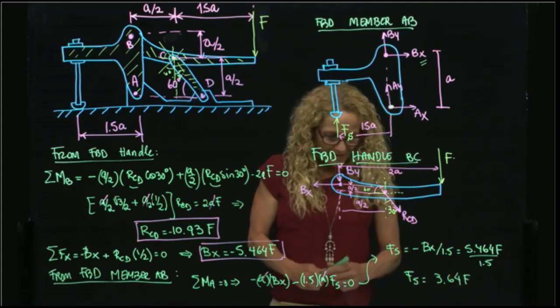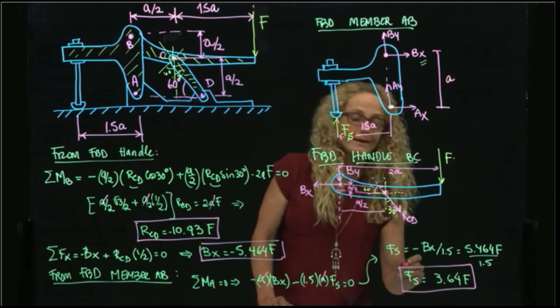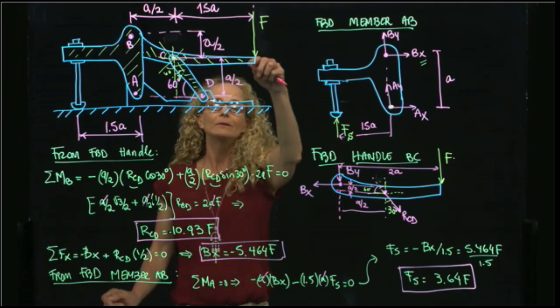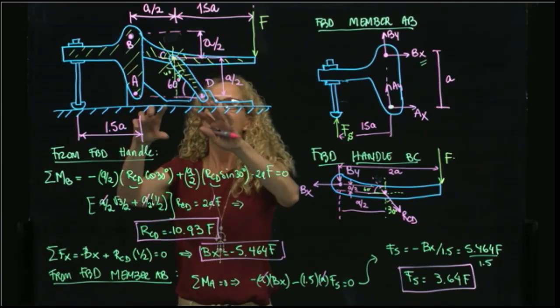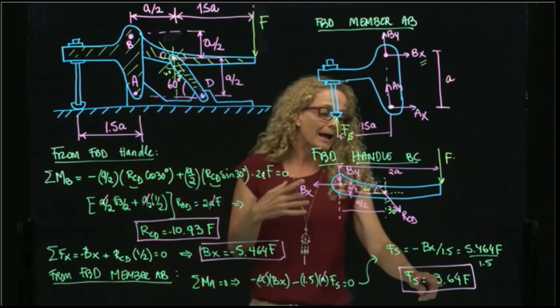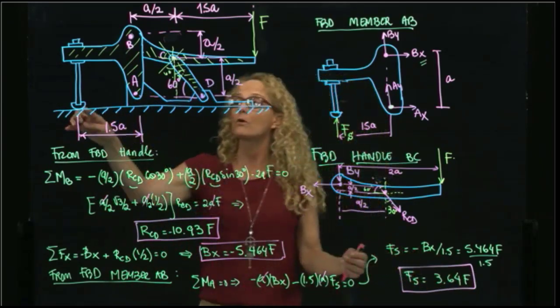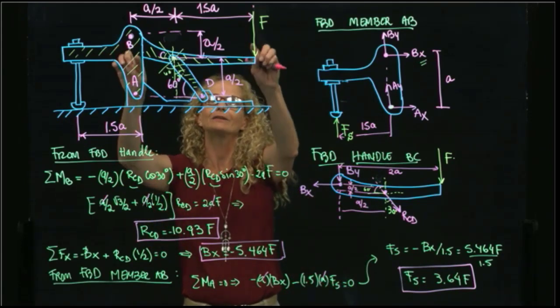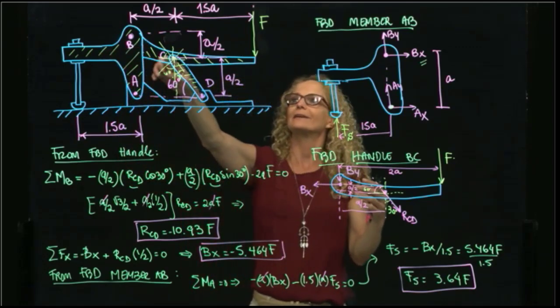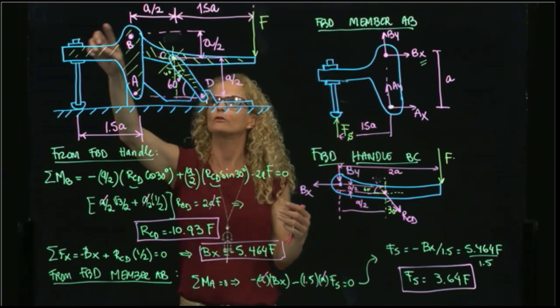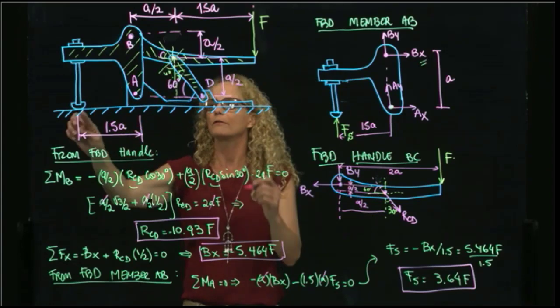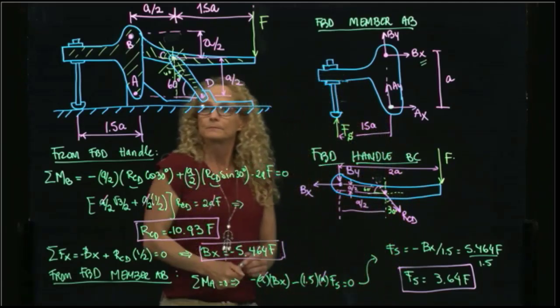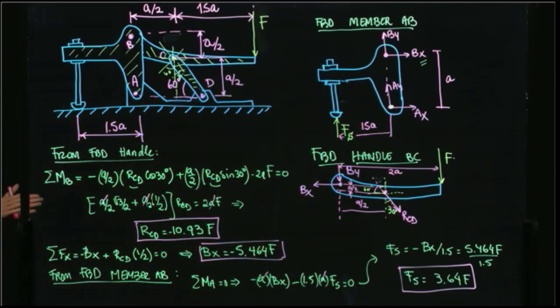I was able to find that if I apply a force in this handle to this mechanism, I am able to almost get four times the force in this surface, because we have a lever here and a handle here. This creates a moment that is transmitted to this member that increases the force 3.64 times.